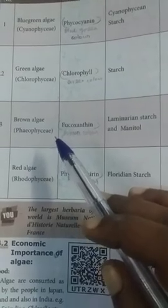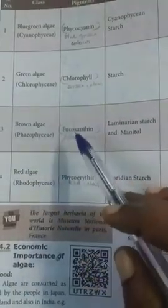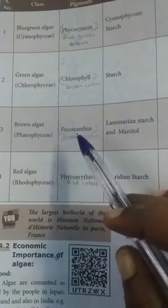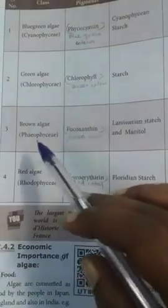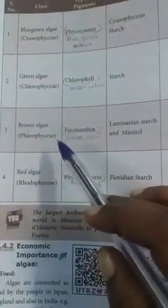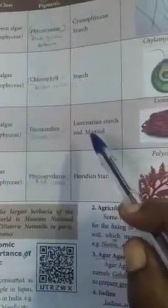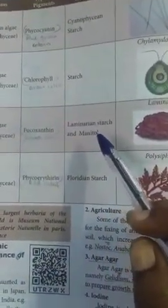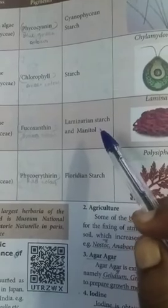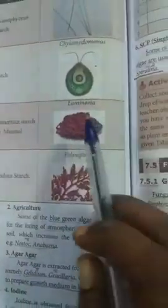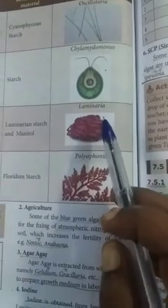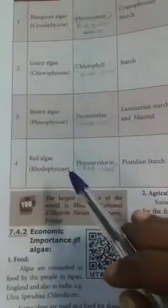Next is brown algae. The pigment in brown algae is fucoxanthin, belonging to Phaeophyceae. The stored food material is laminarin and mannitol. An example of brown algae is Laminaria.